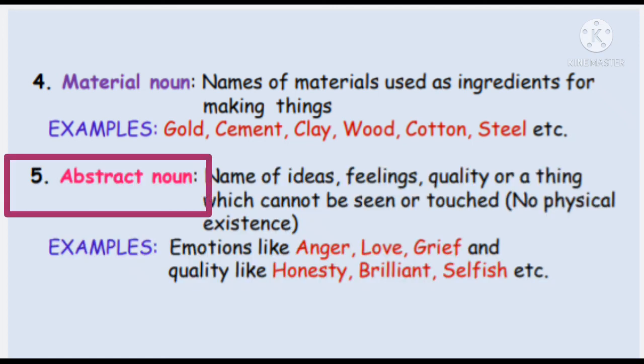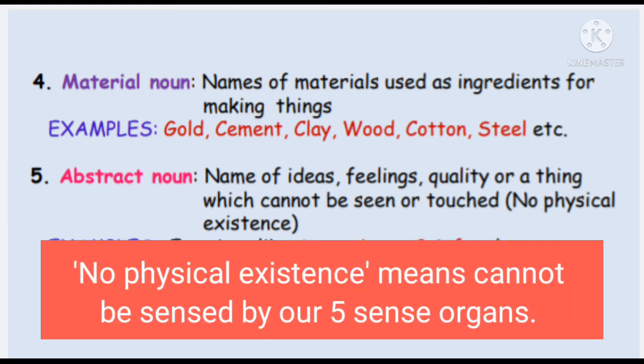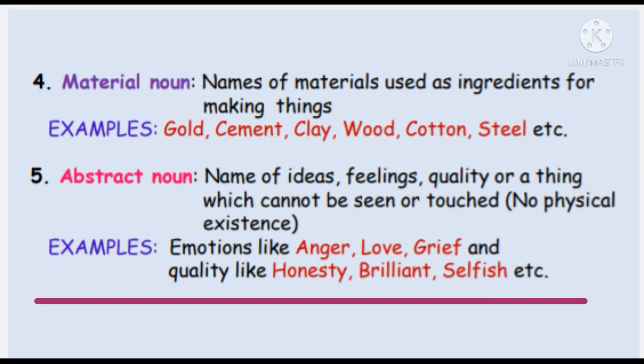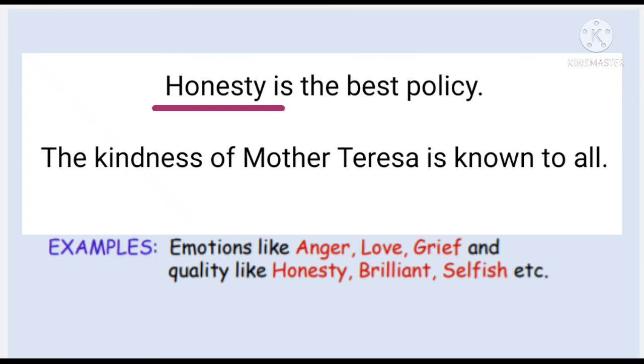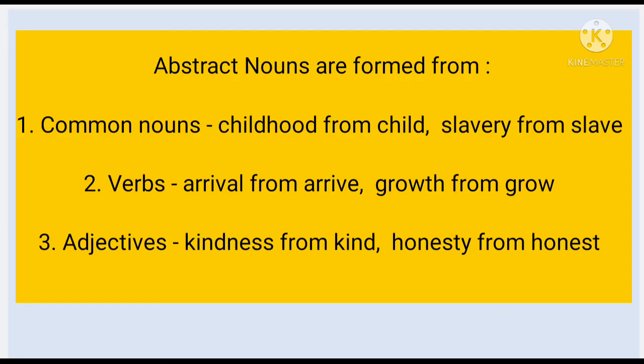Abstract noun: names of ideas, feelings, quality or things which cannot be seen or touched — having no physical existence — are called abstract nouns. Examples as emotions: anger, love, grief. Examples as qualities: honesty, brilliant, selfish. 'Honesty is the best policy' — honesty is an abstract noun. 'The kindness of Mother Teresa is known to all.' Remember that abstract nouns are formed from verbs, common nouns and adjectives.